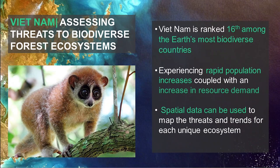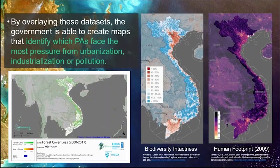Now let's travel east to Vietnam. Vietnam is ranked 16th among the Earth's most biodiverse countries, but in the last 20 years, Vietnam's population has increased from 73 million in 1995 to over 96 million in 2017. This growth is creating a large demand for natural resources being much more rapidly consumed. Data show that Vietnam's unique ecosystems — forests, coral reefs, sea grass, and mangroves — are under continued threat from overexploitation, unsustainable use, and environmental pollution. Vietnam is using spatial data to show where human pressures are impacting protected areas and key forest areas. From left to right on screen, you can see maps of forest cover loss from 2000 to 2017, a map of biodiversity intactness, and a map of human footprint from 2009.